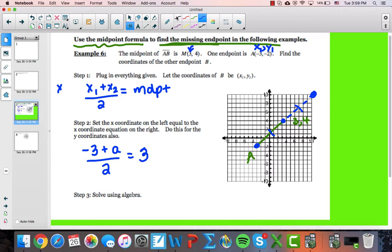Now I have an equation. To solve this equation, we're going to clear the fractions by multiplying both sides by 2. So if we multiply both sides by 2, the 2s here will cancel, and we get -3 plus A equals 6. Then we're going to add 3, so A equals 9. So the x-coordinate of point B is 9.